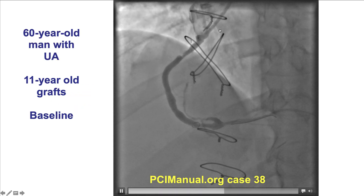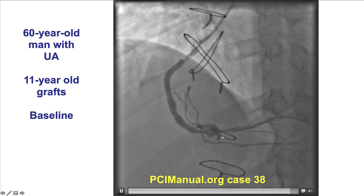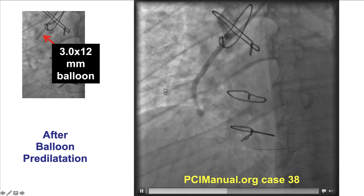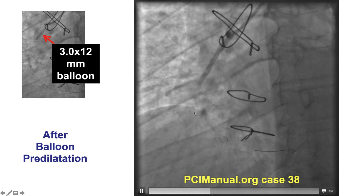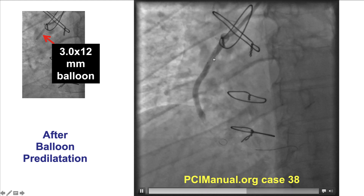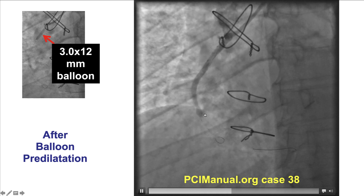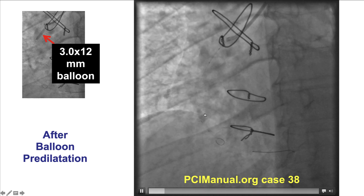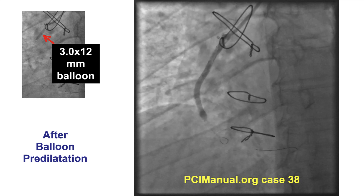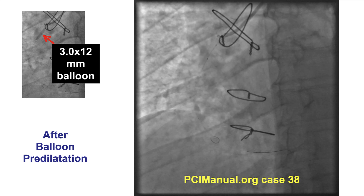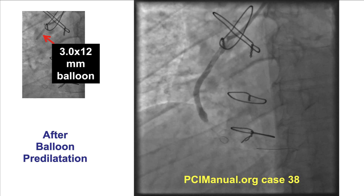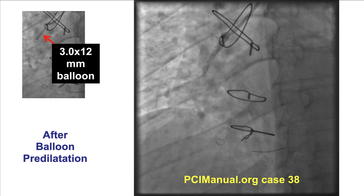This is an example of PCI of a vein graft to the right coronary artery with a proximal lesion. After predilatation, there is sluggish flow. Stenting should not be performed when flow is sluggish — one should first restore flow before placing a stent. Otherwise, severe distal embolization and no-reflow may occur. The exception is when slow flow is due to dissection, in which case stenting is actually the treatment of the cause of the slow flow.